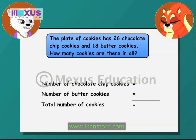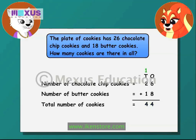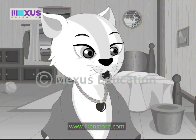How many cookies are there in all? The number of chocolate chip cookies is 26, so the number of cookies is 26 plus 18. First, we need to add the ones: 6 plus 8 is equal to 14. I will write 4 in the ones column and carry over 1 to the tens column. Then we add the numbers in the tens column along with the one carried over: 1 plus 2 plus 1 is equal to 4. So 26 plus 18 equals 44. There are 44 cookies in all. That's wonderful — that is the correct answer!